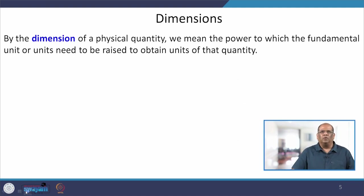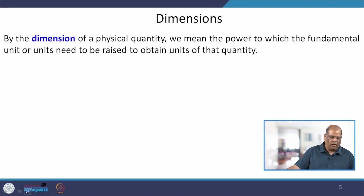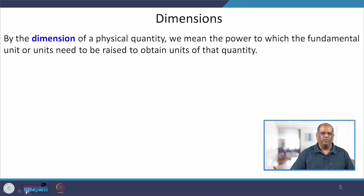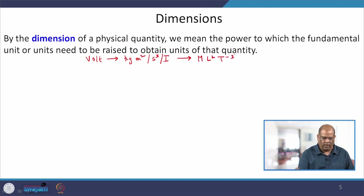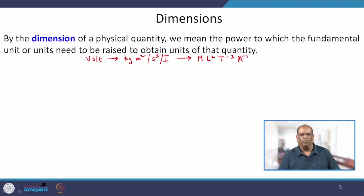How do you define dimension? The dimension of a physical quantity means the power to which the fundamental units are raised to obtain the unit of that quantity. In simplified terms, a physical quantity can be expressed in terms of fundamental quantities — mass, length, and time. For example, the unit of volt is kg·m²/(s³·A), so its dimension is M·L²·T⁻³·A⁻¹.